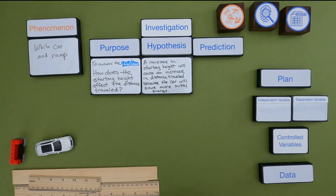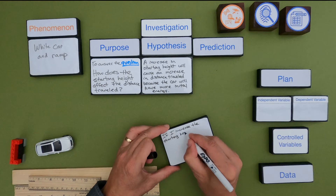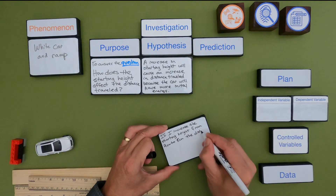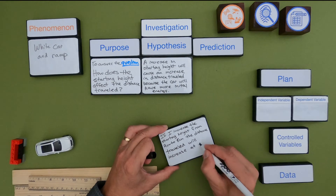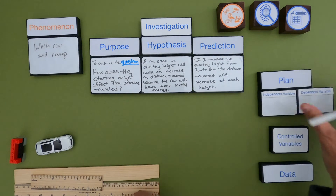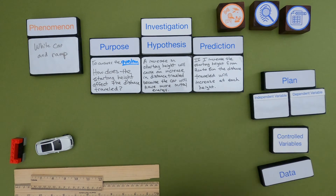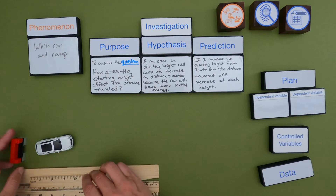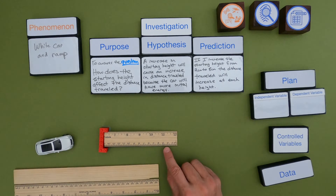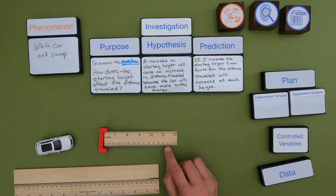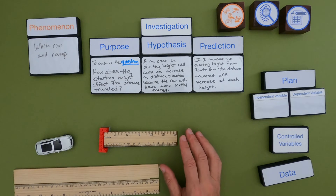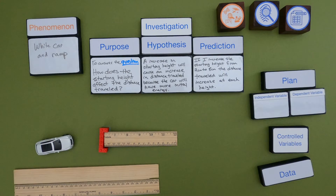Next I want to make a specific prediction. My prediction is: if I increase the starting height from two centimeters up to eight centimeters, then the distance traveled will increase at each height. So if I go two, four, six, eight centimeters, I should see an increase at each of those. With a prediction you want to be as specific as you can, and it's going to help you with the plan. Now I've got these three — purpose, hypothesis, prediction.